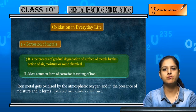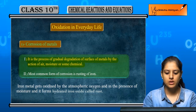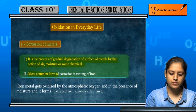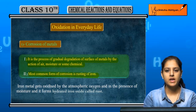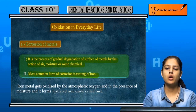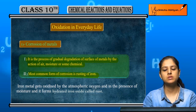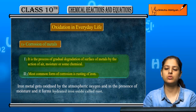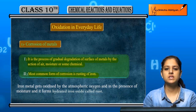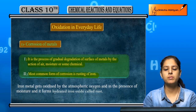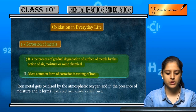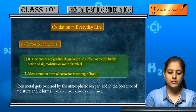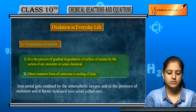Rusting of iron is the most common form of corrosion. Similarly, copper, zinc — ye sab dheere dheere corrode ho jaate hain. Silver ke upar black jo is ki blackening ho jaati hai, so that is also because of corrosion.